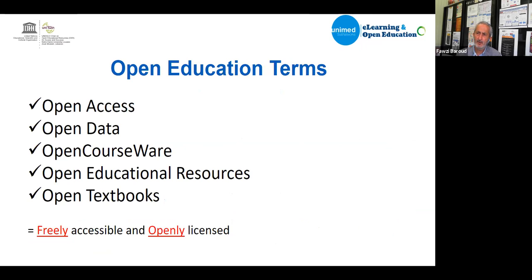Open education terms include: open access, open data, open courseware, OER, open textbook, open pedagogy, open science, and open assignment — many terms fall under open education. When we say 'open education terms,' we're talking about freely accessible material with an open license attached. Open access refers to research articles; open data refers to research data, government data, and ministry data.